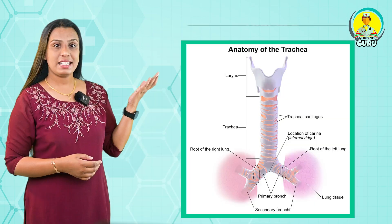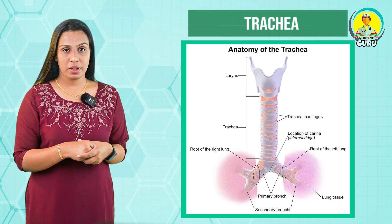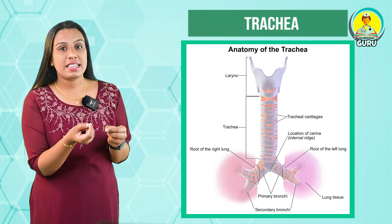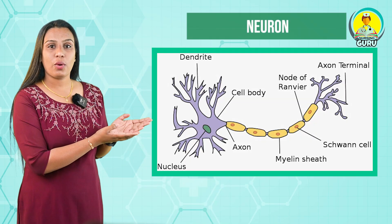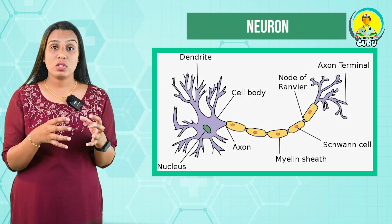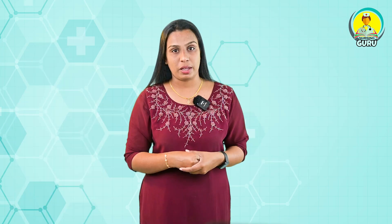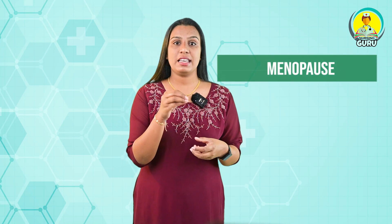Another question is 'what is anatomy?' — anatomy is the science which deals with the structure of the human body. Next is 'trachea' — it is also known as the windpipe, which is the main airway to the lungs; the trachea is a flexible and cartilaginous tube. A 'neuron' — neurons are the building blocks of the nervous system; they receive and transmit signals to different parts of the body. 'Menopause' means the physiological cessation of the menstrual cycle associated with advanced aging.